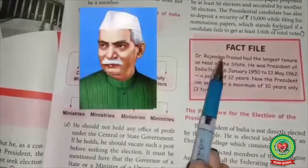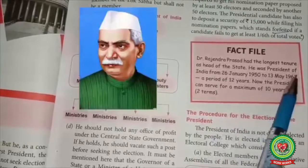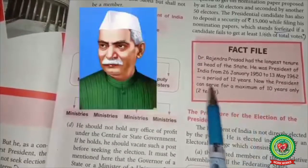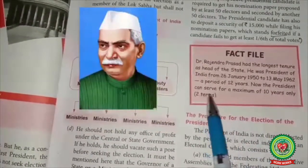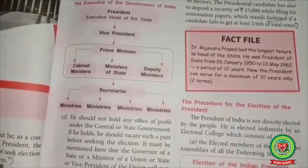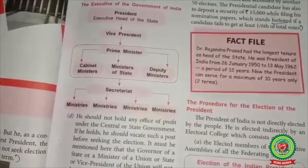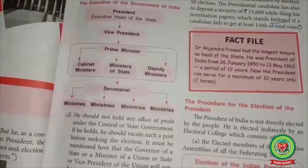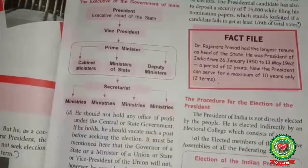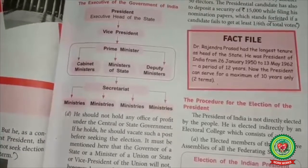Fact file: Dr. Rajendra Prasad had the longest tenure as head of the state. He was President of India from 26 January 1950 to 13 May 1962 — a period of 12 years. As a convention laid down by our first president, no candidate shall seek election of president for a third term.